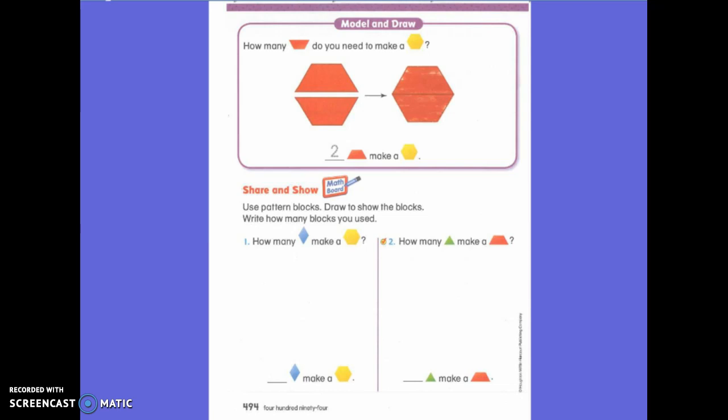I want to see how many trapezoids I need to make a hexagon. That's what I am trying to figure out. Please get out your hexagon. Both of them. You do not have two hexagons. Lay it flat on your desk, please.